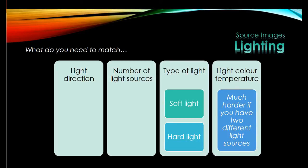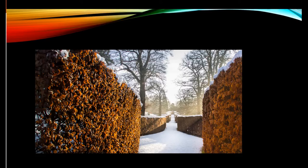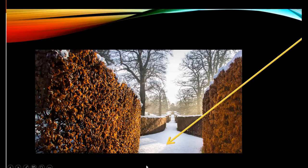So what do you need to match? You need to match the light direction, the number of light sources, the type of light, and the colour temperature. If you have multiple light sources, matching colour temperature can be a lot more complicated. Sometimes lighting direction is really easy to work out — you can see where the shadow is, you can see where the person is, and you basically draw a line between the two and that tells you where your sun is. If you can't see the sun, you can see both the shadows on the ground and, nicely, if there's a bit of mist in the air, you can actually see the line that the light is casting.